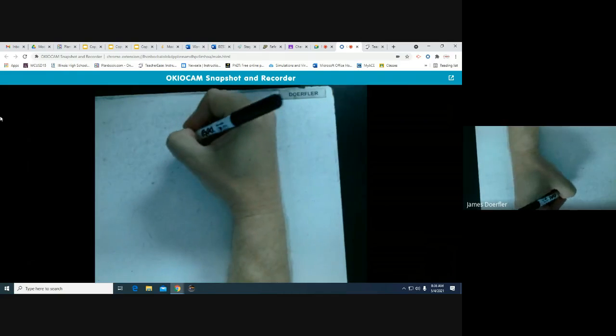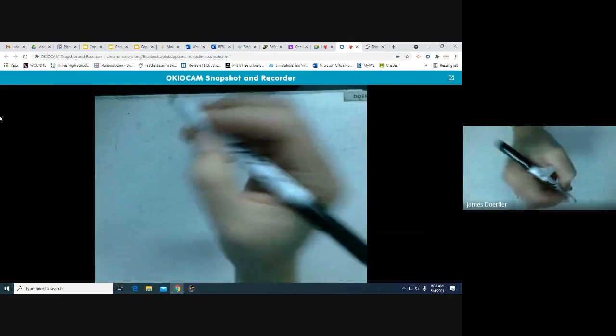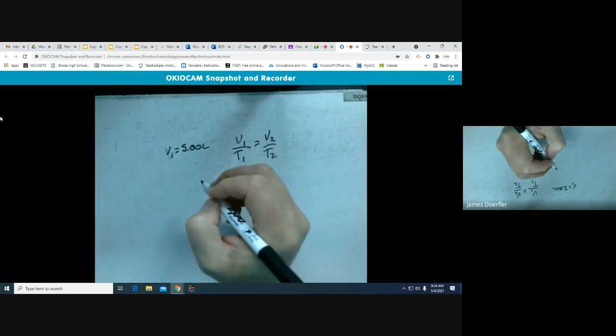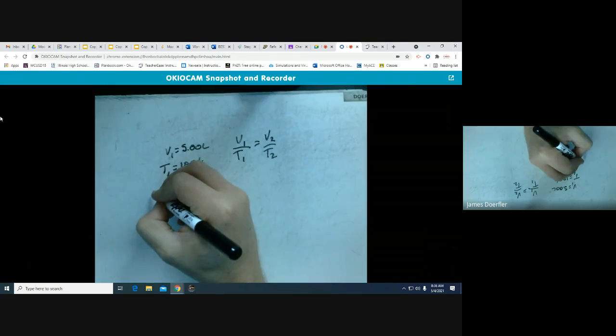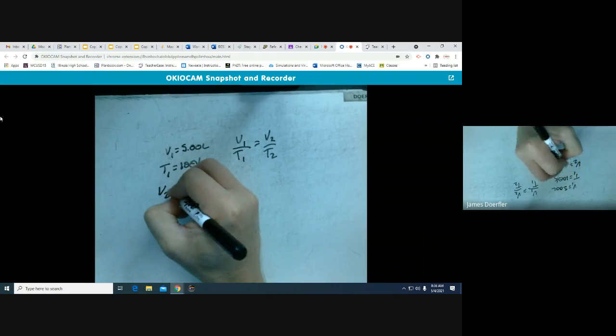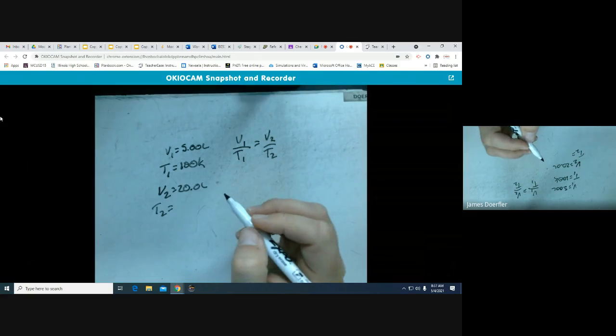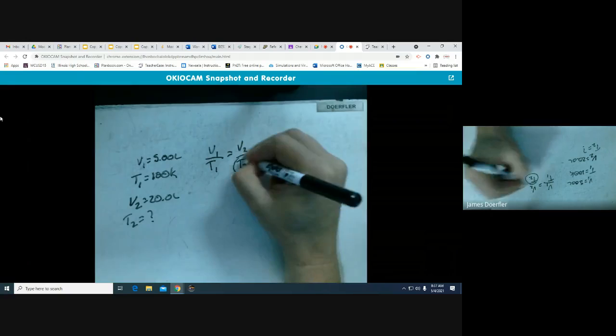That means we have V1 over T1 equal to V2 over T2. What do we know? We know that our initial volume was five liters. We know that our initial temperature was 100 Kelvin. We know that we allowed the container to expand to a new volume of 20 liters. And we need to figure out what the new temperature would be in order to maintain constant pressure. So in this case, we are solving for T2.